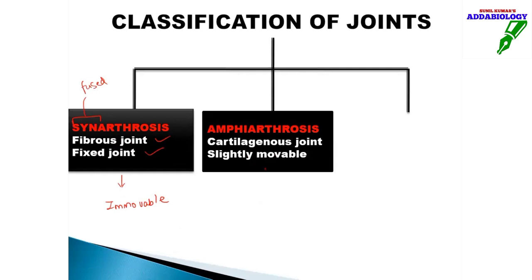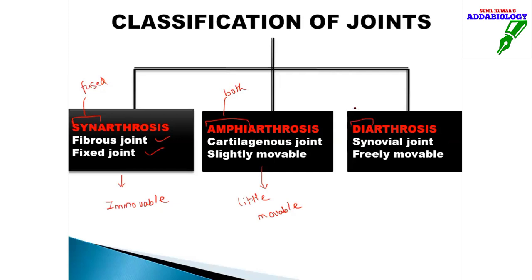The second type is amphiarthrosis, known as a cartilaginous joint — it is slightly movable. The word 'amphi' means both, so there is a little movement of bones while they are also stiff. The third is diarthrosis — 'dia' means through, meaning there is free movement throughout. It is the synovial joint and is freely movable.